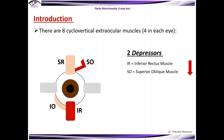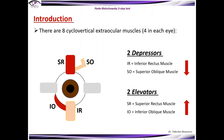There are 8 cyclo-vertical extraocular muscles, 4 in each eye: 2 depressors — the inferior rectus muscle and superior oblique muscle — and 2 elevators — the superior rectus muscle and inferior oblique muscle.